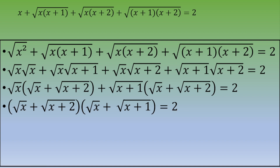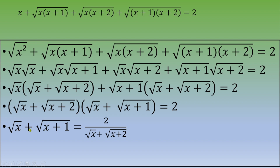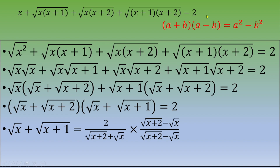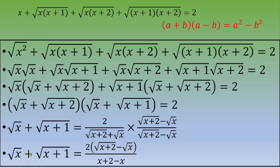One way to proceed is to express √x + √(x+1) = 2 / (√x + √(x+2)). We then rationalize the denominator by multiplying by its conjugate, using the identity (a+b)(a−b) = a²−b². This gives √x + √(x+1) = 2(√(x+2) − √x) / (x+2−x).